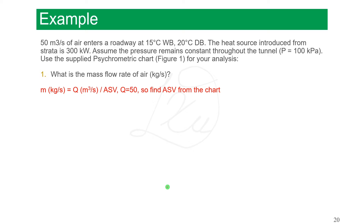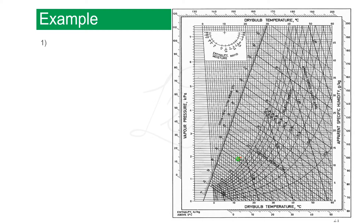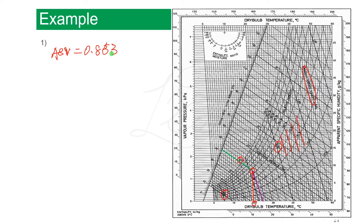The first question is: what is the mass flow rate of air? We know that mass flow rate equals volumetric flow rate divided by apparent specific volume. The volumetric flow rate is 50. We need to find the ASV from the psychrometric chart. From the problem, the wet bulb temperature is 15, so we draw a green line from there. The dry bulb temperature is 20, so we draw a red line from there. From the intersection point, we can determine other psychrometric properties. For apparent specific volume, we draw a line in parallel with the ASV lines — that's the purple line. Here 0.8 and 0.9 are reference lines, and we can read off ASV equals 0.853 cubic meters per kilogram.